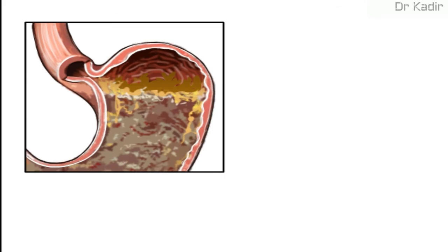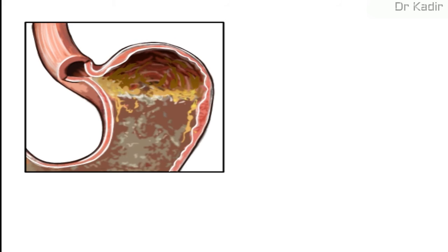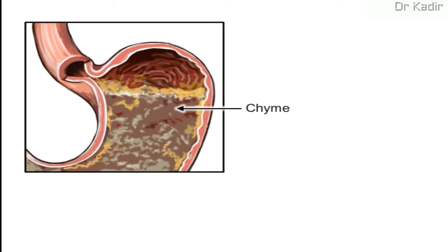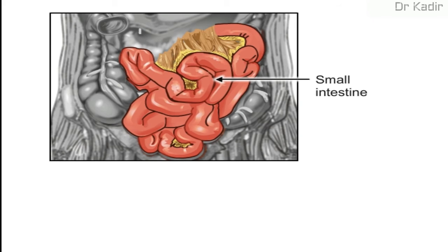There, the food is churned into a liquid mixture called chyme that moves into the small intestine, where peristalsis continues.